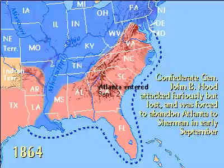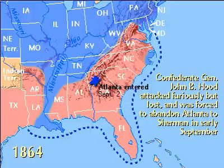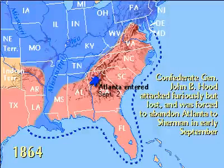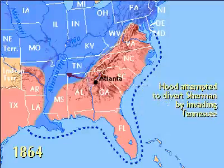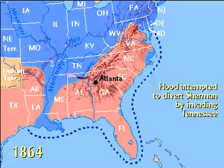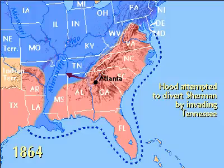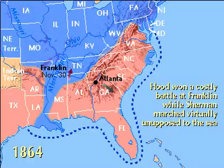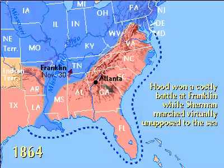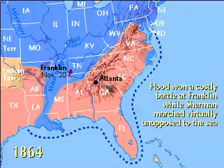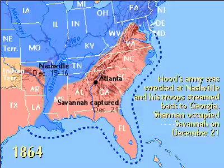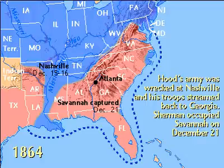Johnston was replaced by General John Hood, a gallant but reckless officer who was soon forced to abandon Atlanta to Sherman in September. Hood then invaded Tennessee, hoping to divert Sherman north. Though Hood won a costly battle at Franklin, Sherman ignored him and marched through Georgia virtually unopposed, cutting a swath of destruction to the sea. Hood's army was finally wrecked at Nashville, while Sherman occupied Savannah on December 21st.